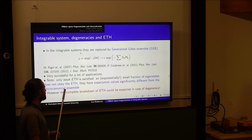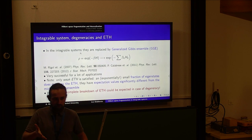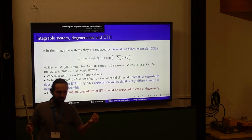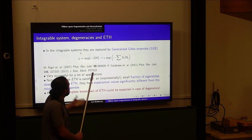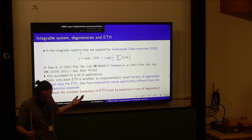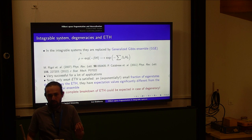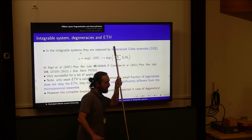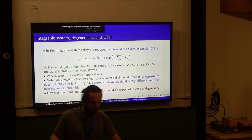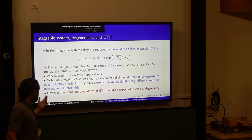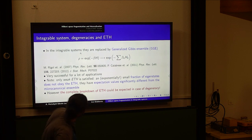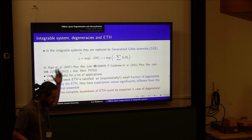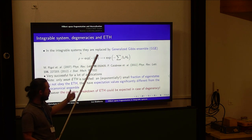People started to apply ETH and proceeded to something called the generalized Gibbs ensemble (GGE). A quick explanation: in the usual Gibbs ensemble we have a partition function with the Hamiltonian. In the generalized Gibbs ensemble, people decided it's more natural to write not only the Hamiltonian but all the Hamiltonians — each one with its own Lagrange multiplier, its own inverse temperature. This was a great success; I believe Rigol was among those who proposed this hypothesis, and there was big development thereafter.